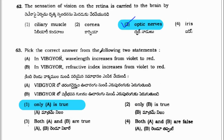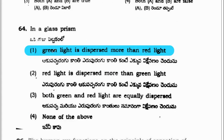Next question: pick the correct answer from the following two statements. In VIBGYOR, wavelength increases from violet to red — this is a correct statement. In VIBGYOR, refractive index actually decreases from violet to red, but the given statement says it increases, so that statement is wrong. Only A is true. In a glass prism, green light is dispersed more than red light.